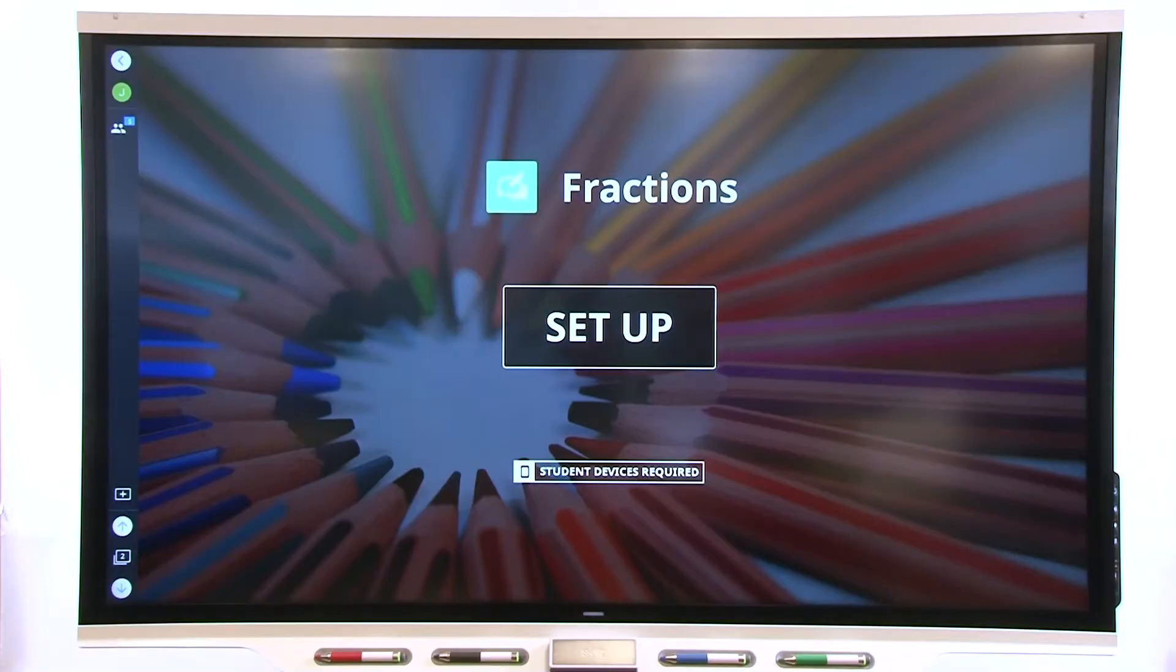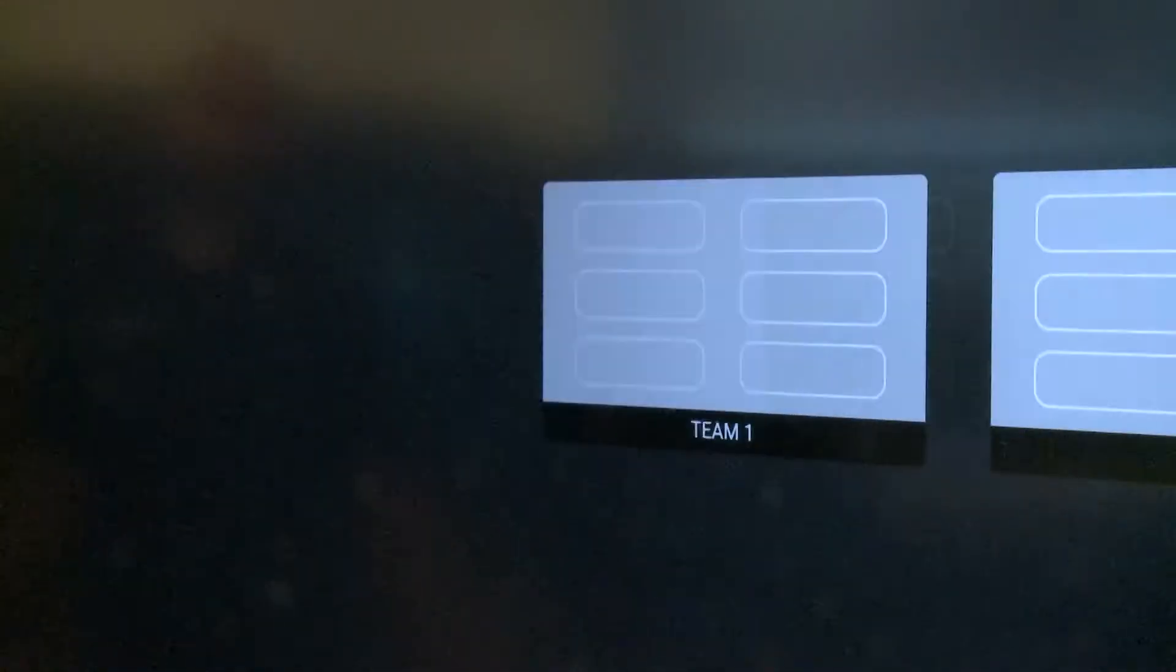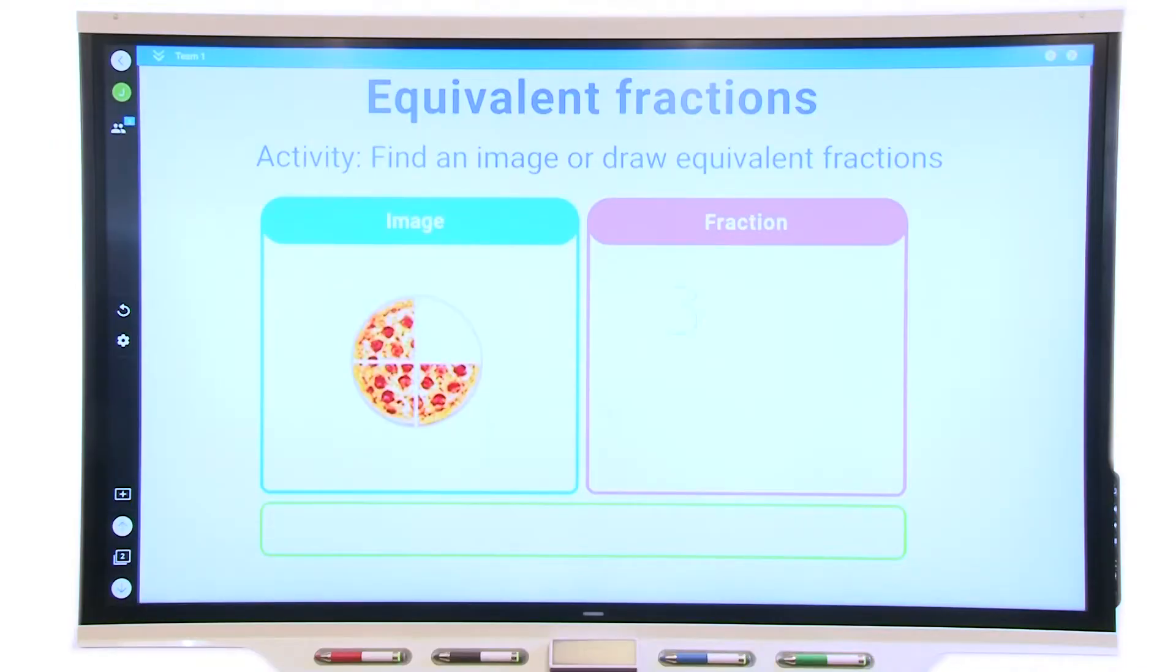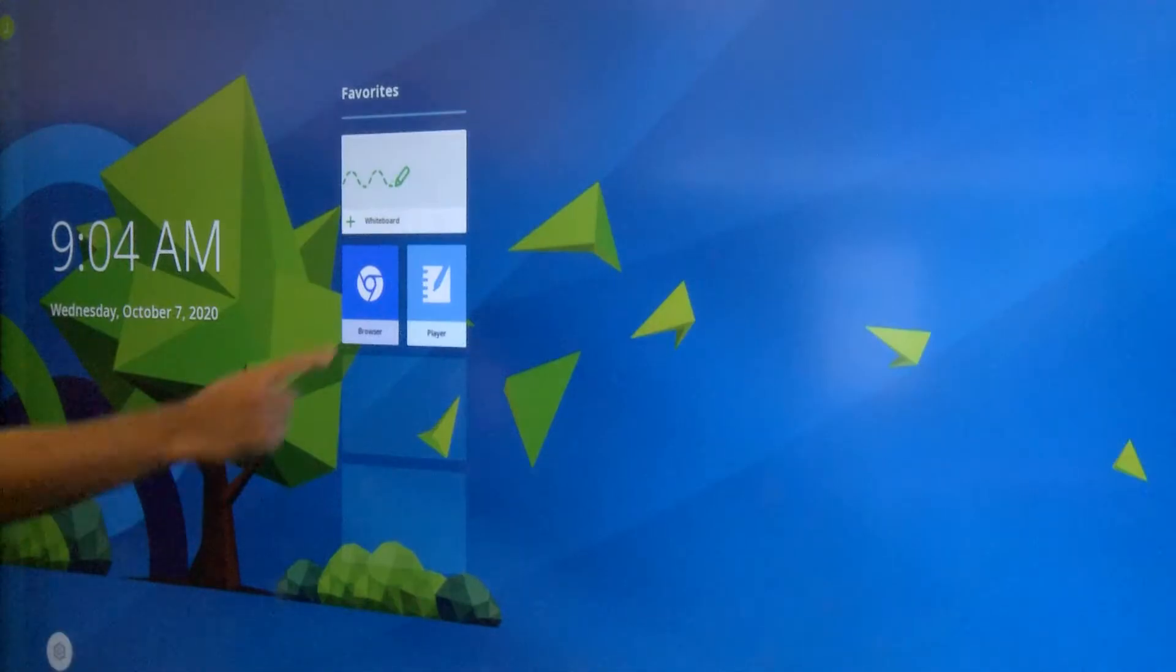Running a workspace activity involves dividing students into teams, beginning the activity, and then using your workspace dashboard to monitor each team's progress and provide feedback. Open the lesson in the Player app.